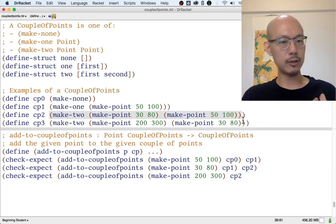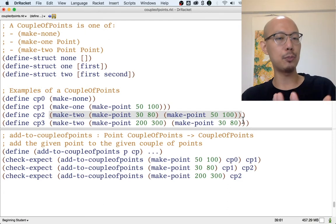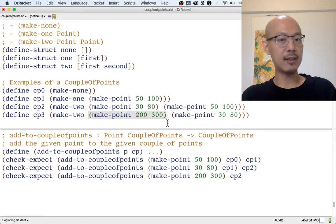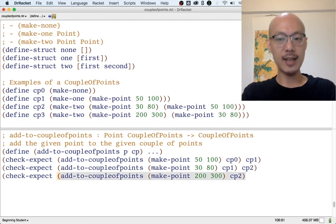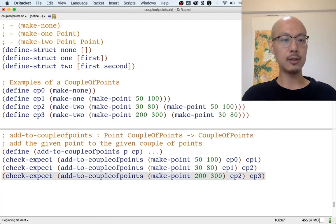Well, now we're forced to drop a point, because we have no way to have three points. So we can't just say, oh, you have two points, so we have one, now it gets three. We have to drop a point. And we decide to drop the oldest point. So we drop 5100, and we keep 3080, and we put that next to 200, 300, and that's CP3. So that's our third example for the function add to a couple of points.